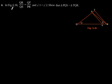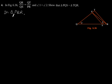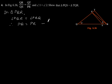Exercise 6.3, question number 4. In figure 6.36, QR by QS is equal to QT by PR, and angle 1 is equal to angle 2. Show that triangle PQS is similar to triangle TQR. Considering this figure, in triangle PQR, angle PQR is equal to angle PRQ. Therefore PQ is equal to PR. Let's call this Equation 1.